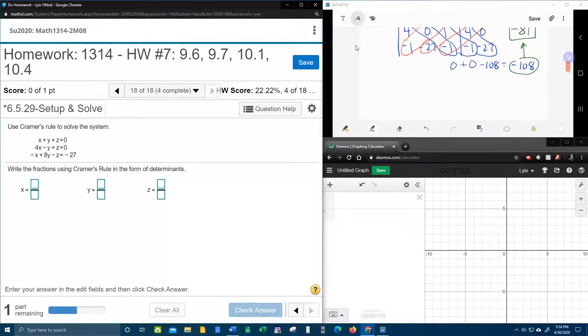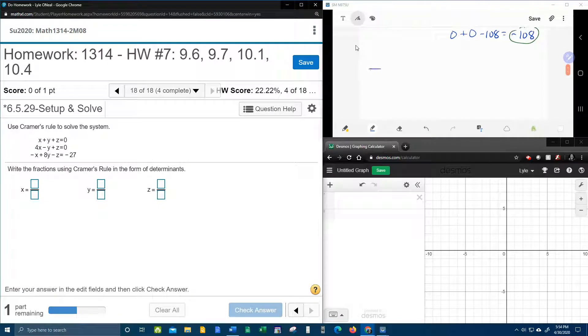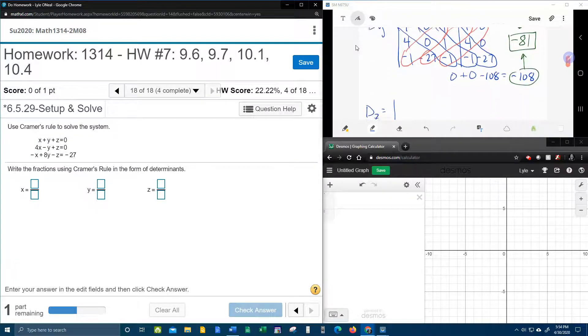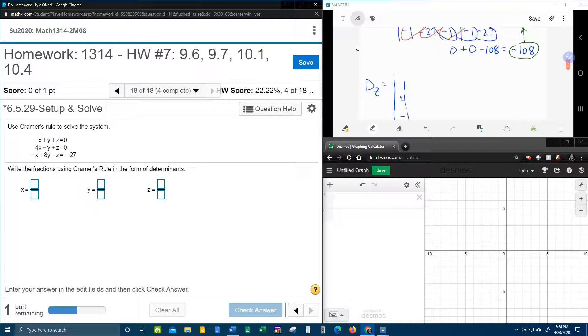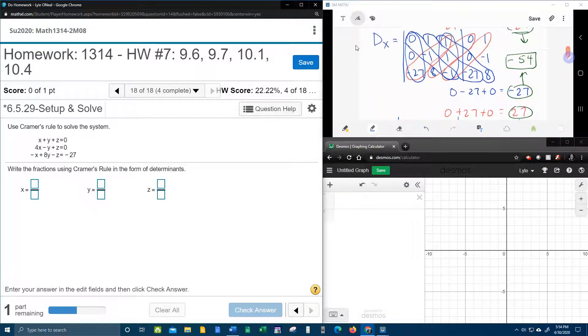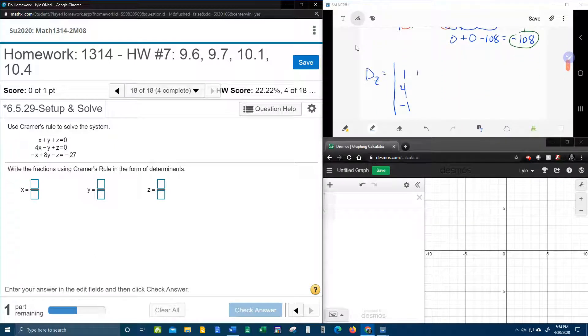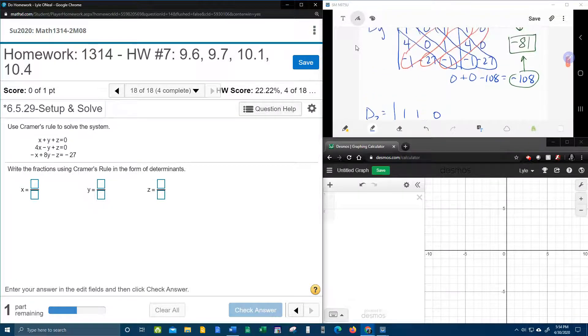All right, here we go. One more time, like Britney Spears. Hit me, baby, one more time. D sub z. So now the x's get to stay, 1, 4, negative 1. And the y's get to stay, 1, negative 1, and 8. And the z's now get replaced with the constants, 0, 0, negative 27.